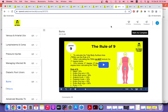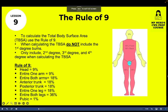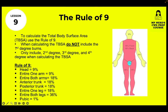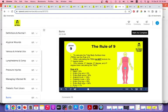Lesson 9 covers burns and how to calculate TBSA using the rule of nines. You cannot include first-degree burns in your TBSA calculation — if the scenario says the patient has a first-degree burn on one arm, do not include it. Only include second-, third-, fourth-degree and up. Per the rule of nines, the head is 9%, one entire arm is 9%. The chapter also includes scenarios showing how to calculate the rule of nines and TBSA.